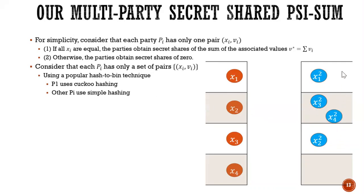And therefore, each bin contains either zero or more than one item. And now we do OPPRF, bin by bin. So we continue to do bin by bin and recall that OPPRF, the sender can have a set of pairs.